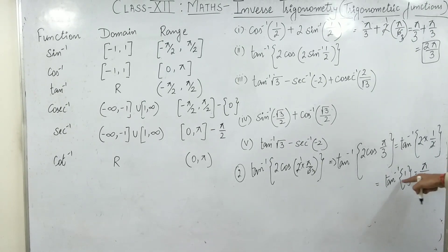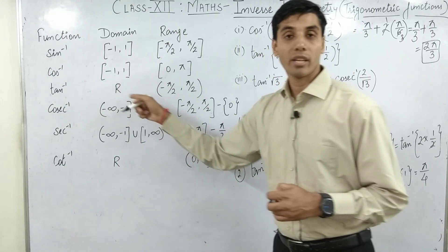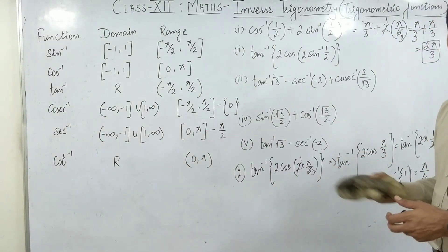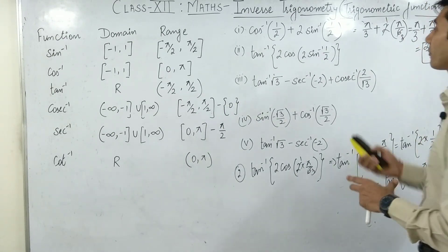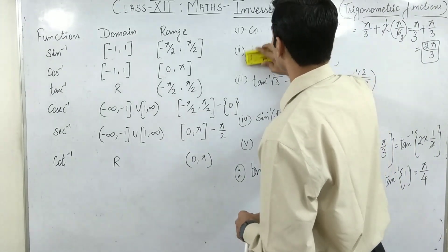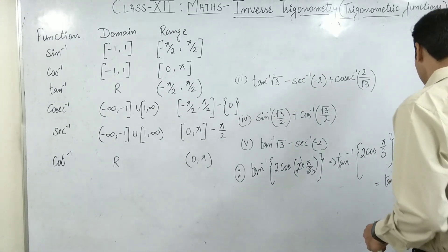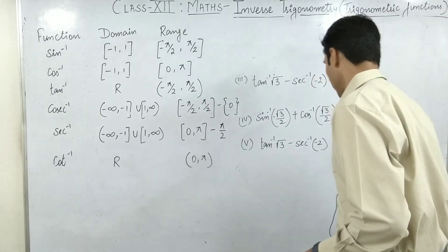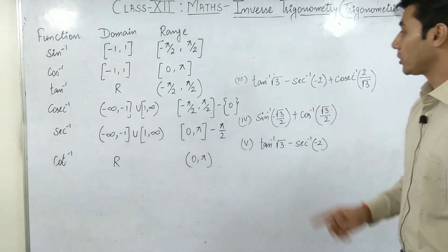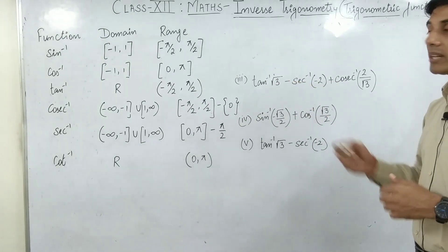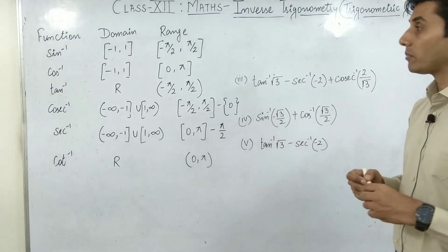The answer is pi by 4. Remember, in tan inverse, 1 is a valid real number value, so no issues there. The key is just to learn the class 10 trigonometric table and the answers come automatically. Now let's move on to question number 3: tan inverse of root 3. In the tan table, root 3 appears at 60 degrees, which means pi by 3.